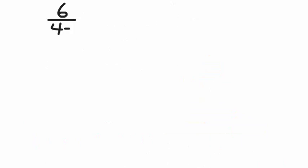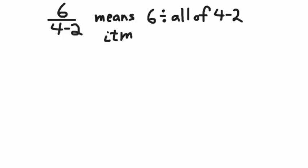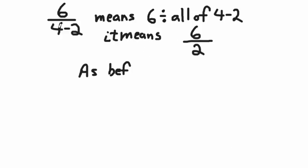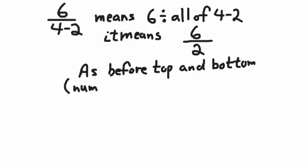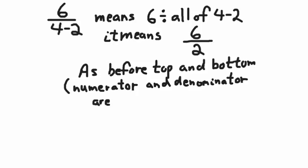Let's try another example — what if the bottom is an expression instead of just a single number? 6 divided by all of 4 minus 2. That means you have to calculate the bottom separately from the top. You always calculate the top separately and the bottom separately before you do the final divide. So 4 minus 2 is 2, meaning 6 divided by 2 — the answer is 3.